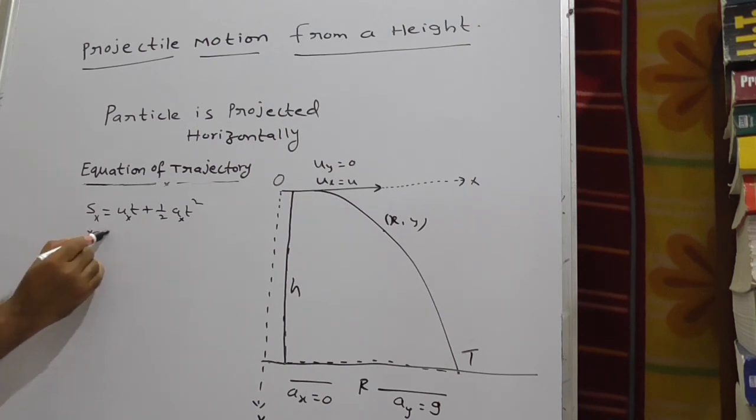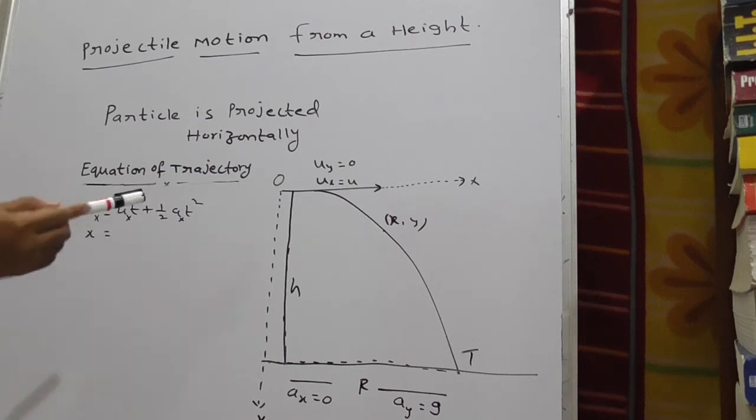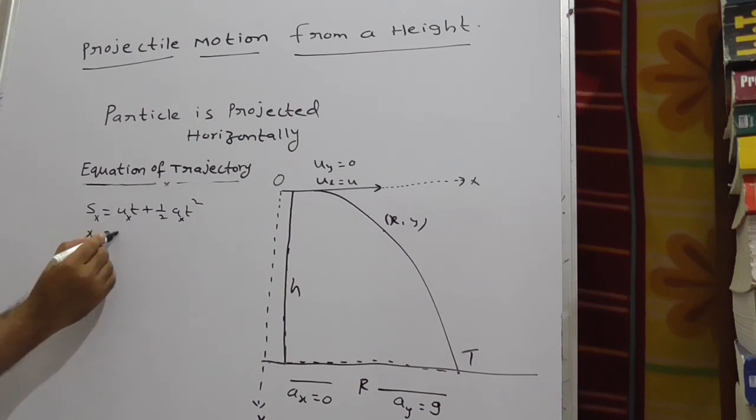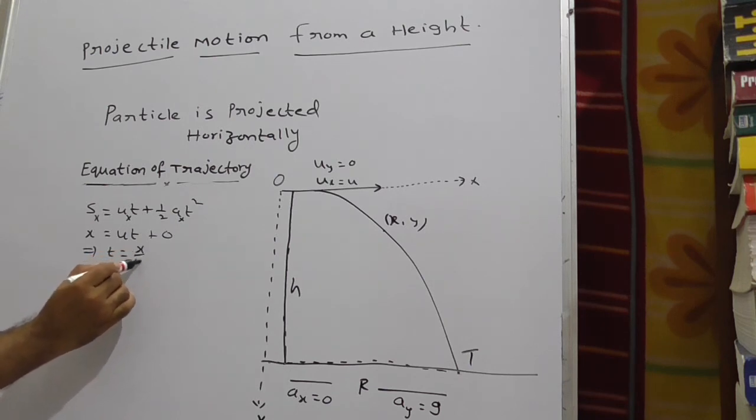So here sx gives x. What is x? That is the distance of the particle. ux gives as u, x is equal to ut. Ax is 0. Therefore, 0 and something 0. Now, by using this you can write t is equal to x by u.